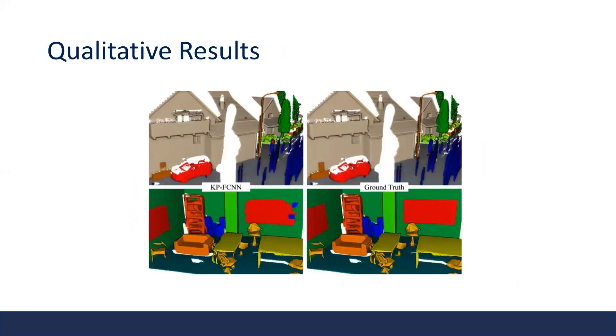Here are some qualitative results of the proposed method, where the left is the model predictions, and the right is the ground truth. We can see that the model is able to produce very accurate segmentation results.